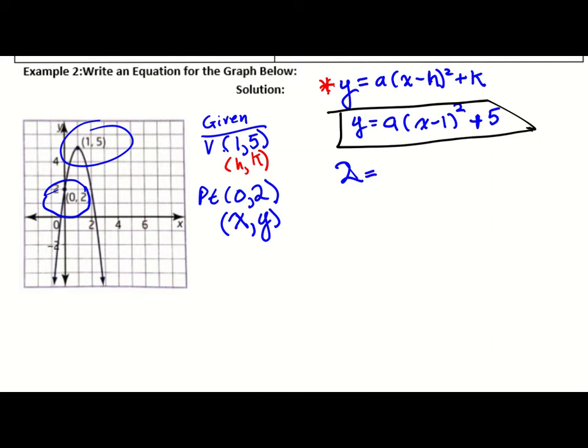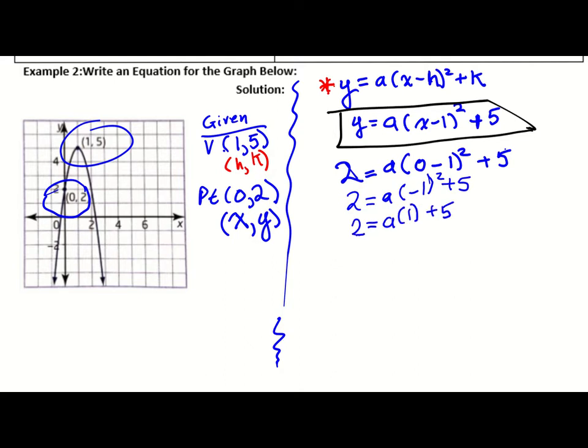We have something that looks like this. 2 is equal to a times 0 minus 1 squared plus 5. And now we just have to solve for a. We're going to take our time and expand and solve. Using BEDMAS, we simplify the bracket. We get negative 1 squared. Punch that in your calculator and you're going to get 2 equals a times 1 plus 5.